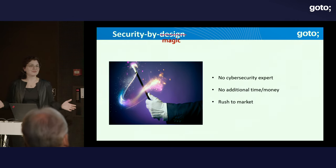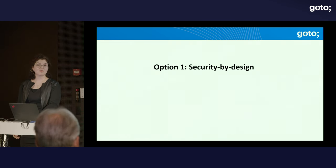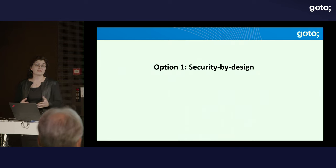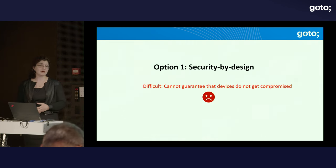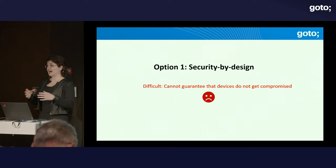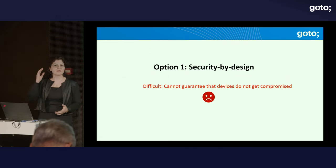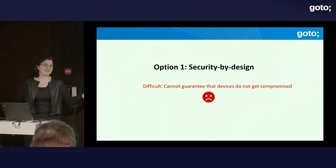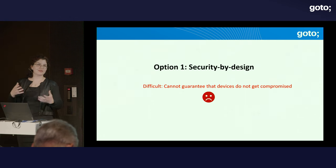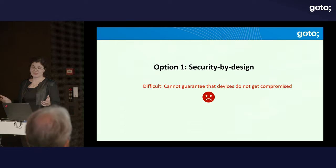As a result, security by design is the best way to prevent a device from getting compromised, but it is difficult to achieve. And even if we design a secure IoT device, we can never guarantee 100% that this device is secure. At some point, we must assume the malware will get there. Because of the limited resources of IoT devices, the device can eventually get compromised. So it's a reasonable assumption.